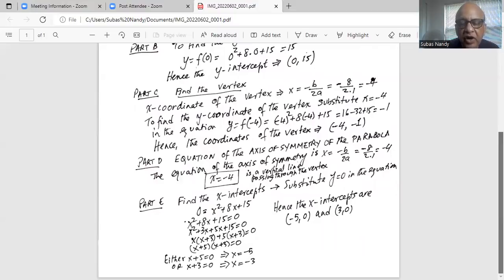Which means either x plus 5 is equal to 0, and we subtract 5 on both sides to get x equal to minus 5, or x plus 3 is equal to 0, and x equal to minus 3.